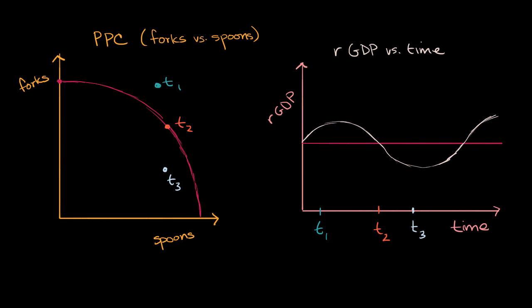So let's start off at time T sub one right over here. From what we know of production possibility curves, what is going on in the economy? Pause this video and try to think about that. Well, we know that if you're on your production possibilities curve, you're operating at your potential. But here we have a situation where we are operating beyond our potential.